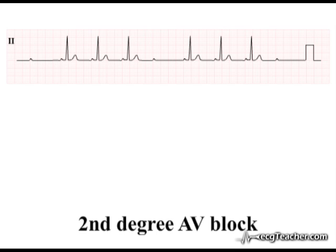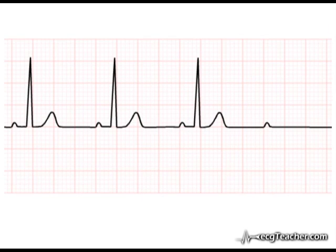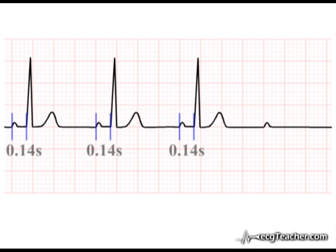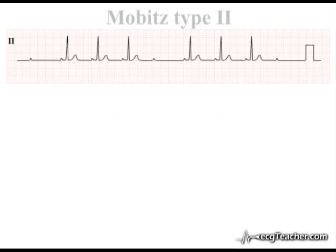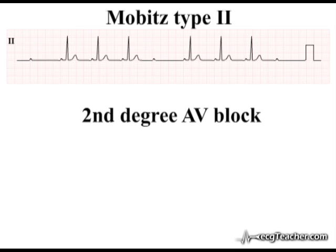In Mobitz type 2 second degree AV block, by definition, there is an intermittent failure of conduction of P-waves to the ventricular myocardium. However, unlike the Wenckebach phenomenon, there is no progressive prolongation of the PR interval before the non-conducted P-wave. Analyzing this strip, we note that within the groups the PR interval is constant. With intermittent failure of P-wave conduction and a constant PR interval, this is Mobitz type 2 second degree AV block.